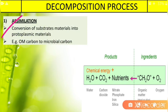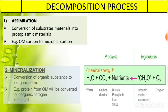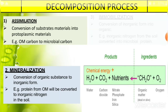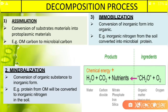The decomposition process involves three steps. First is assimilation: the conversion of substrate materials into protoplasmic materials — for example, organic carbon to microbial carbon. Next is mineralization: conversion of organic substances to inorganic form — for example, protein from organic material converted to inorganic nitrogen in the soil. Third is immobilization: conversion of inorganic form into organic form — for example, inorganic nitrogen from the soil converted to microbial protein.